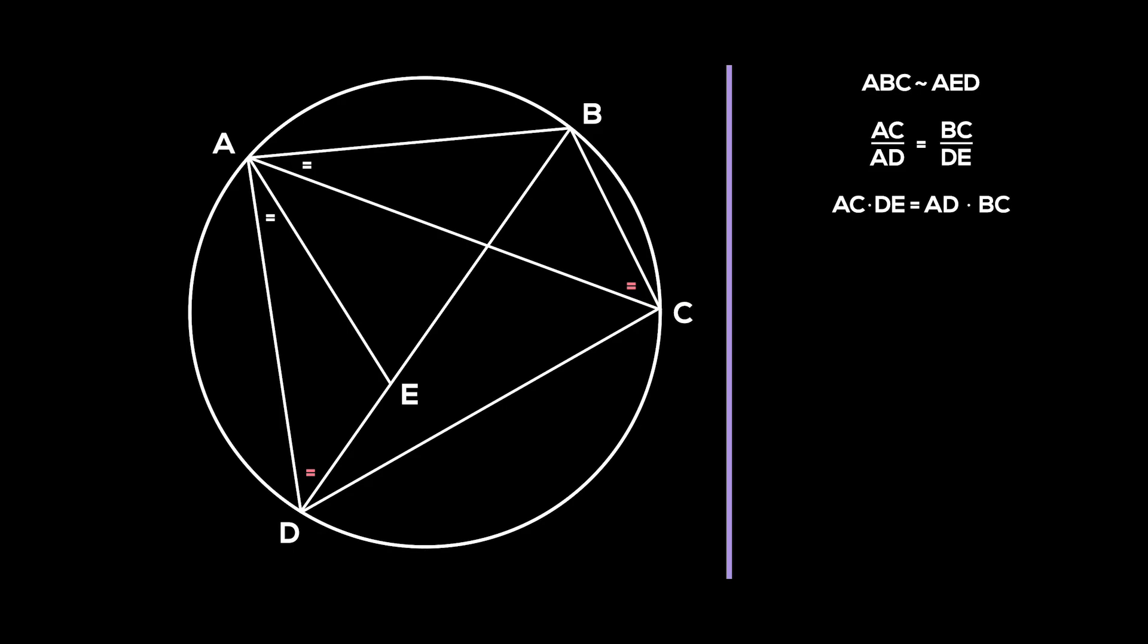Now, let us take a look at two other triangles. We know that angles DAC and EAB are equal. Also, angles DCA and EAB are equal as they are also angles in the same segment, with chord AD. Thus, triangles AEB and ADC are similar.